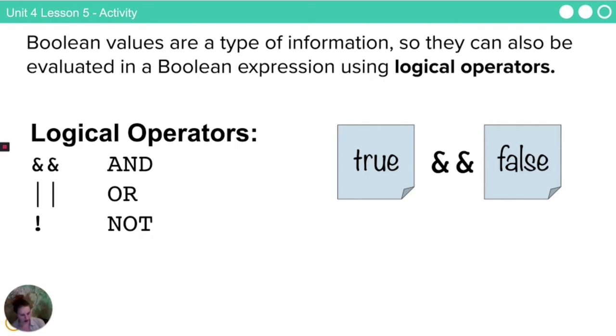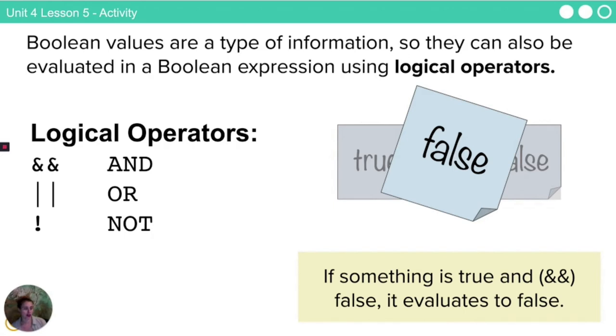On our computer when I say and, and I say something is true and false, it evaluates to false. And just a note here that and as the word is represented in our computers as two ampersand signs, or is two vertical lines, and not is this exclamation point. Which makes sense from what we did earlier when we noticed that we had exclamation point equals was not equal to.